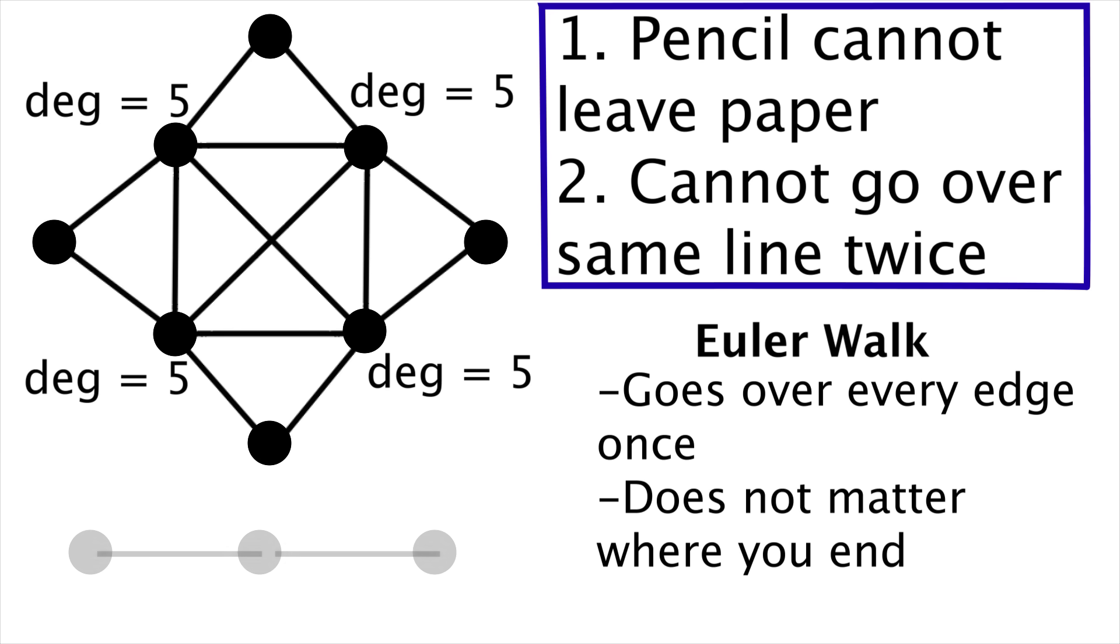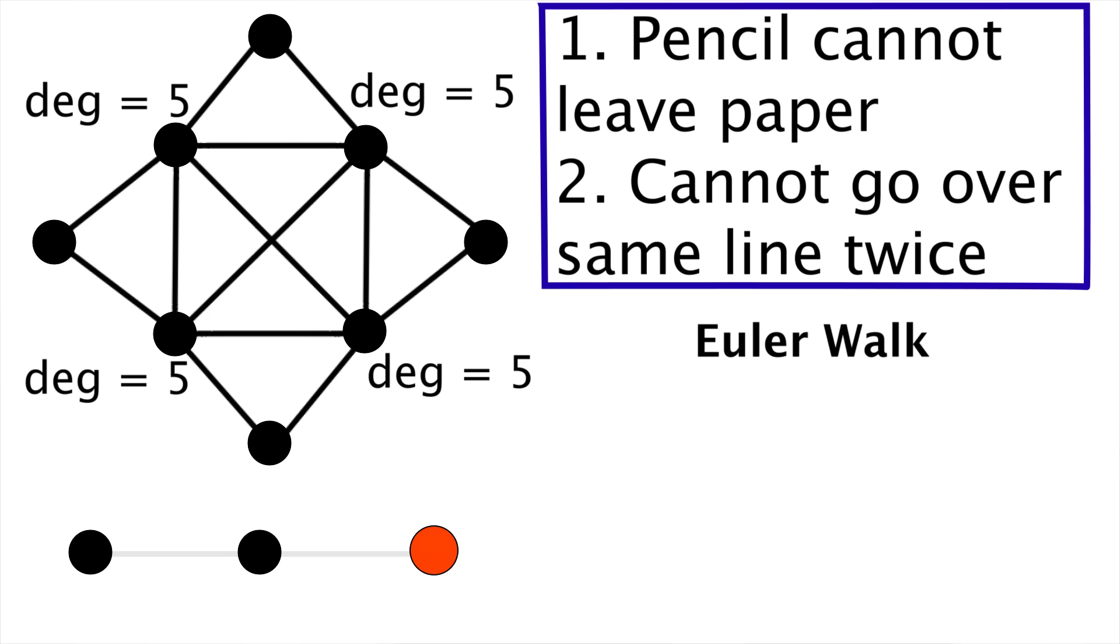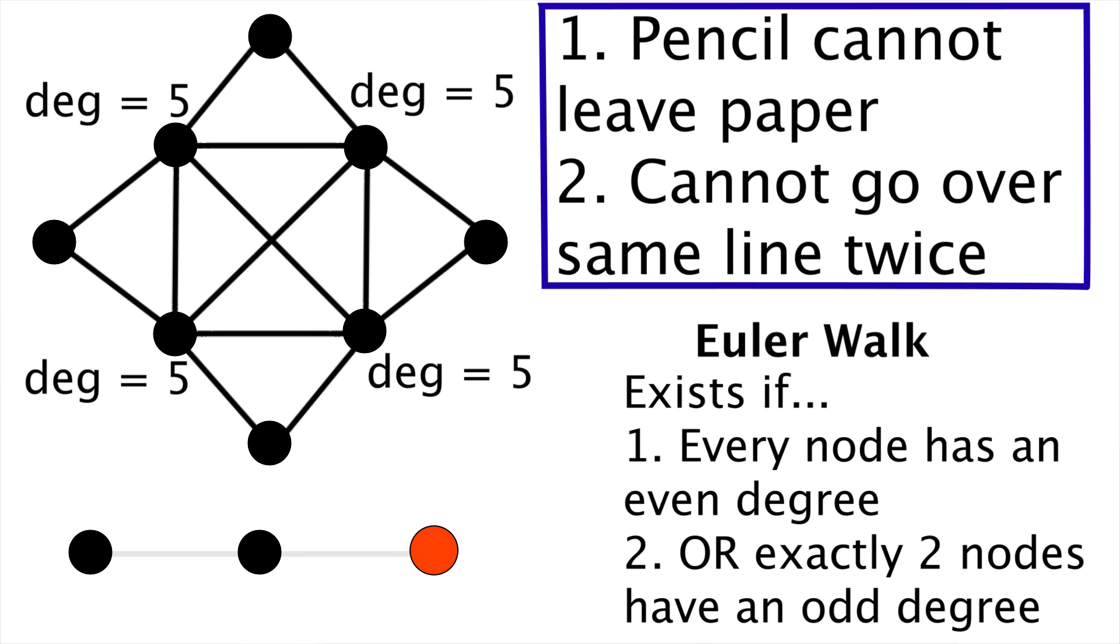For example, this graph has an Euler walk. We can go over every edge just once and we don't end up where we started, but that's totally fine. I won't show why, but you can prove fairly easily that even though an Euler tour needs every node to have an even degree, an Euler walk will exist if and only if every node has an even degree or two nodes have an odd degree.